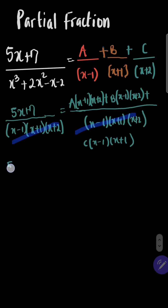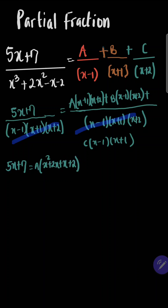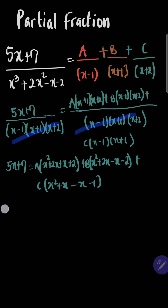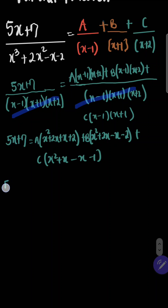We have 5x plus 7 equals A times the bracket. Expanding the bracket, you're going to have x² plus 2x plus x plus 2. Now plus B — expanding the bracket, we're going to have x² plus 2x minus x minus 2. Plus C — expanding the bracket, we're going to have x² plus x minus 1.